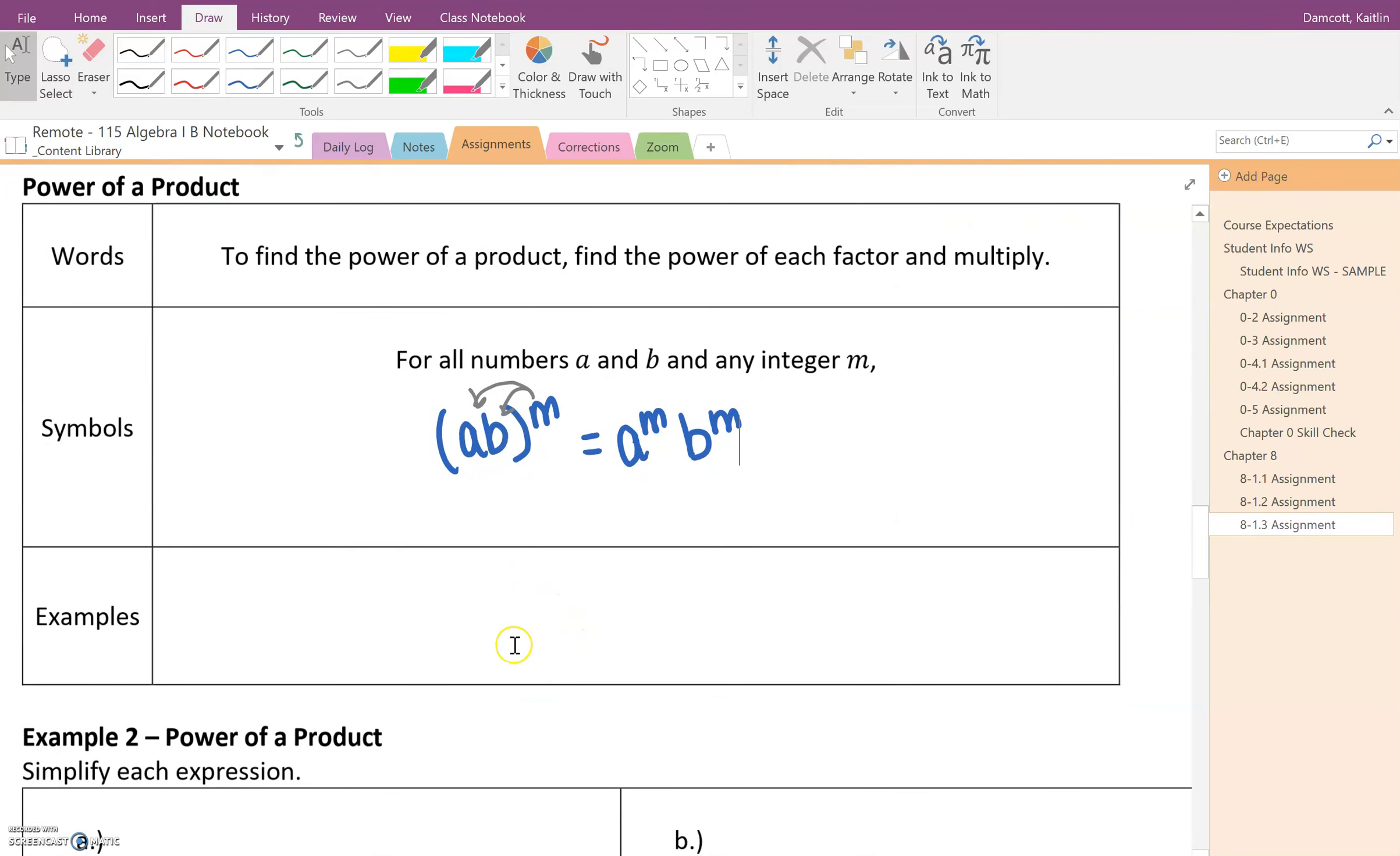Now with numbers involved with it, if we had something that looked like this, where we had -2xy, this one has three total factors, the -2, the x, and the y, and we're going to raise it to the third power, you would distribute to each factor. So I am looking at -2 to the third, we've got x to the third, and y to the third.